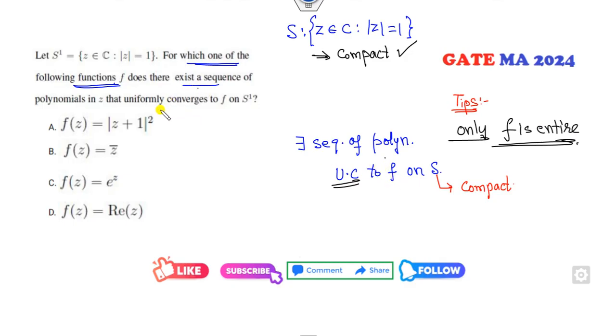So clearly, this is not an entire function. Why? If you take the derivative with respect to z-complement, it is 1, which is non-zero. e^z we all know is an entire function.